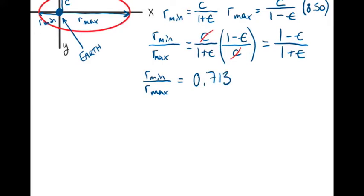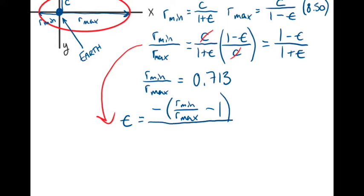This expression can be algebraically rearranged to give epsilon equals negative rmin over rmax minus 1, which is the same as 1 minus rmin over rmax.